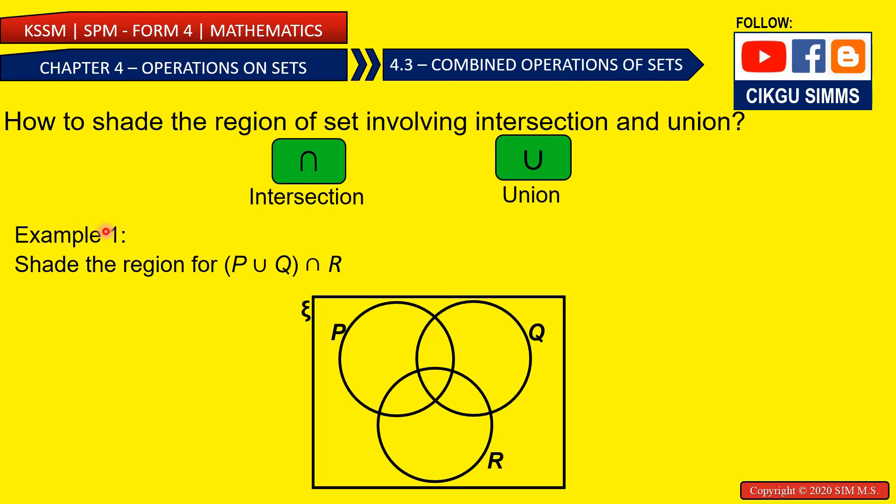So this is the first example, shade the region for P union Q, intersection R. So you need to do the bracket first, and then this part. So this is the first part and this is the second part. After you do both of this part, you need to do the intersection of these two parts.